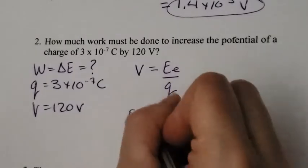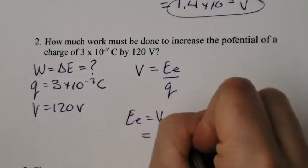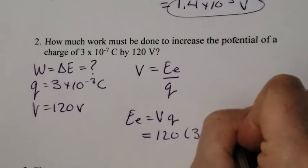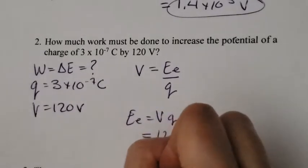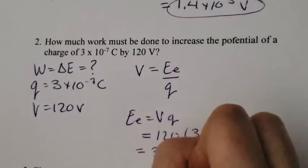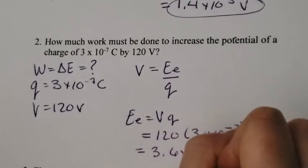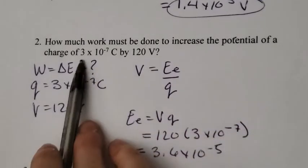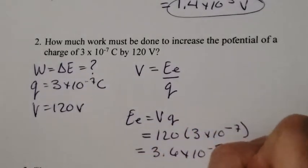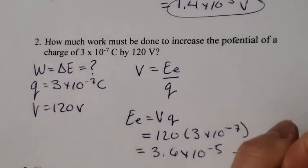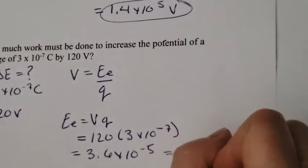Plug in my numbers. So 120 times 3 times 10 to the negative 7, and I end up with 3.6 times 10 to the negative 5. Now, in this question here, there's only one significant digit there, so I need to round this to 4. So this will just be 4 times 10 to the negative 5 joules.